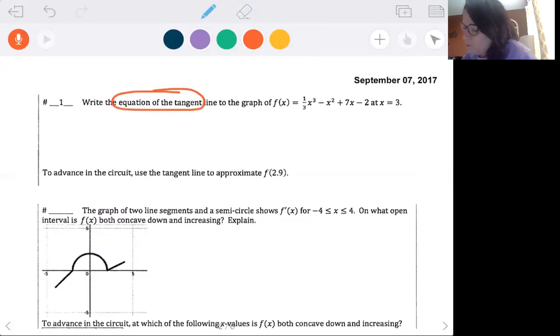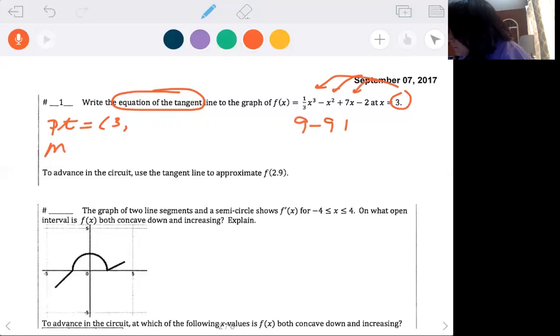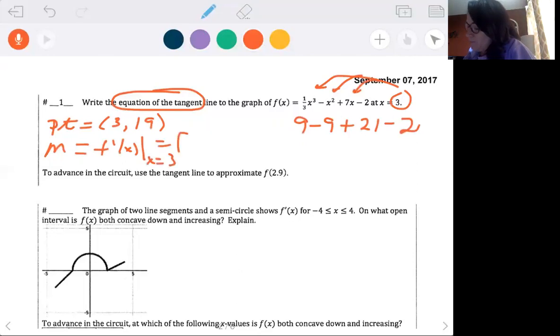Write the equation of the tangent line. Remember, we always need a point and we always need a slope. At x equals 3, our point is 3 comma, and I need to go plug this in. That'd be 1/3 of 27, or 9 minus 9 plus 21 minus 2, and so that's going to be 19. My slope is the derivative, f prime of 3. So I take the derivative using power rule: x squared minus 2x plus 7. At 3, I have 9 minus 6 plus 7, which is 10.